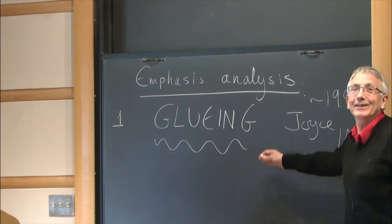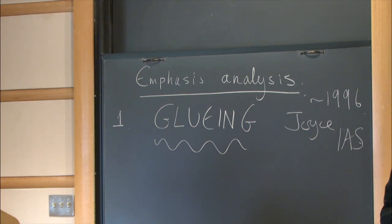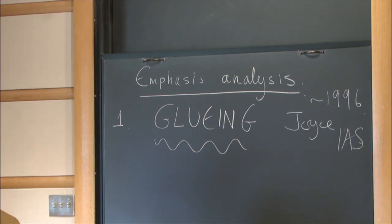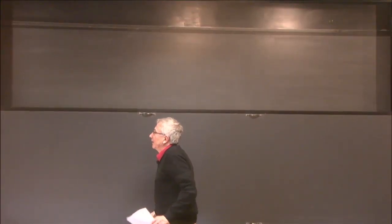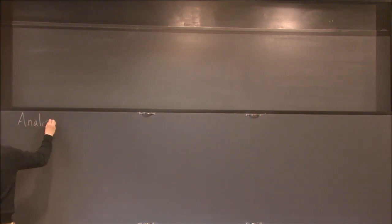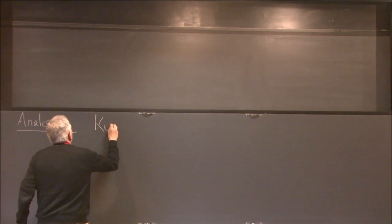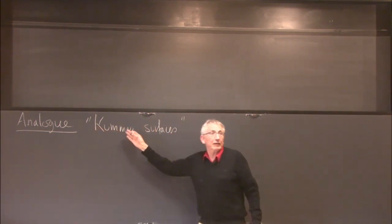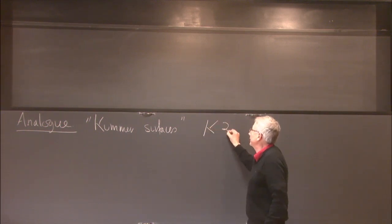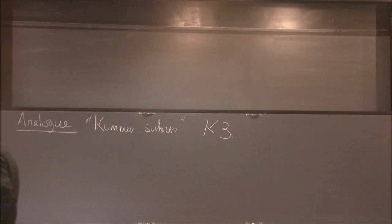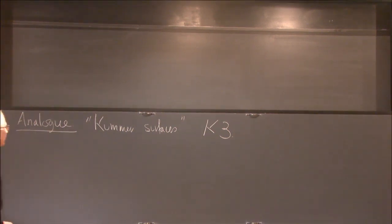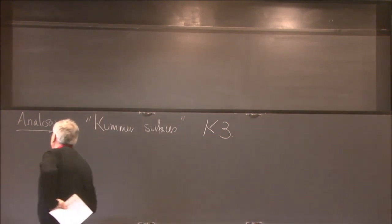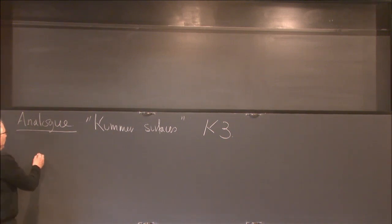Let me explain what we mean by gluing techniques and in particular how they enter into the construction of compact examples of manifolds with G2 holonomy. Let's explain this through an analogy with the case of Kummer surfaces. Classically this is a particular kind of K3 surface, but what we mean here is understanding the Calabi-Yau metric on the K3 surface.